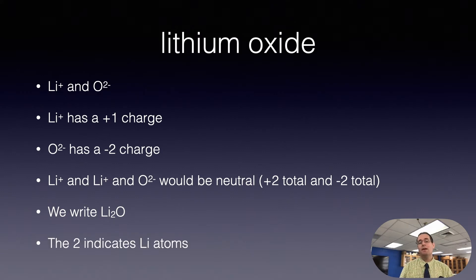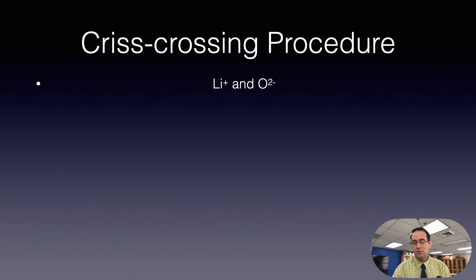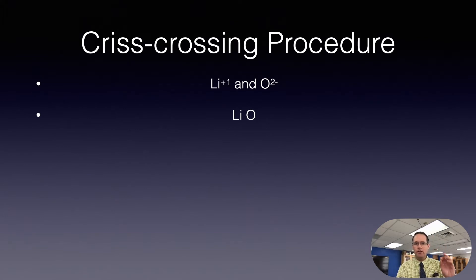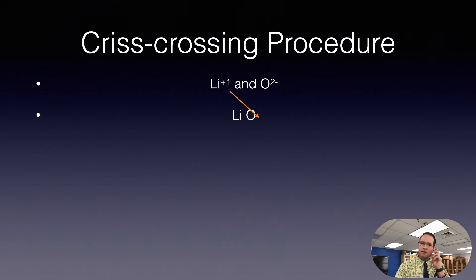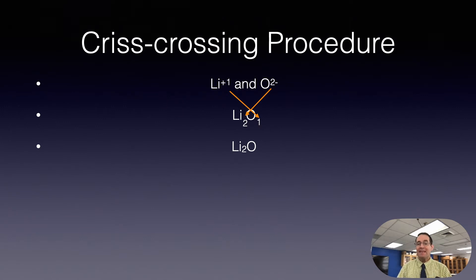The subscript 2 tells us how many lithium atoms we have, and notice how it is written slightly lower on the page. One way to figure out the formula easily is to use the crisscrossing procedure. Take Li⁺ and O²⁻ — we don't write the ones in chemistry, but write the 1 as scratch work. Move only the magnitude of the charge: the 1 from lithium becomes the subscript for oxygen, and the 2 from oxygen becomes the subscript for lithium.